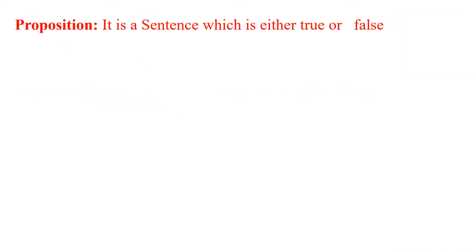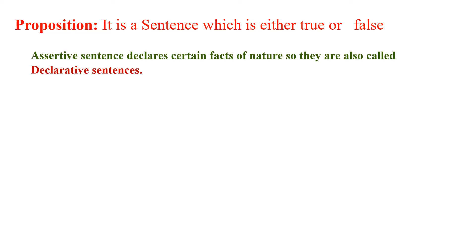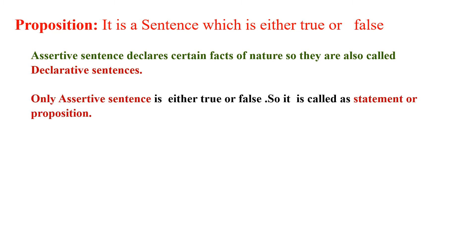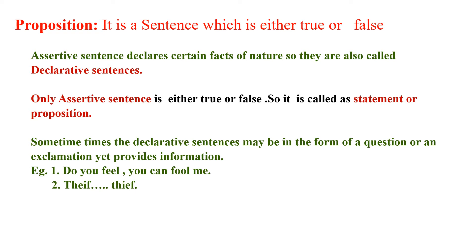A proposition is a sentence which is either true or false. An assertive sentence declares certain facts of nature, so they are called declarative sentences. Declarative sentences are the only propositions; the rest are mere sentences. This is because an assertive sentence is either true or false. Sometimes declarative sentences may be in the form of a question or an exclamation yet still provide information.